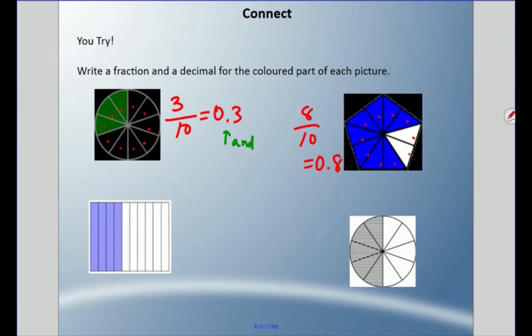Let's move on to the square at the bottom here. 1, 2, 3, 4, 5, 6, 7, 8, 9, 10. I've verified that there are ten equal pieces. How many are colored? Four. 4/10, and our decimal is 0.4.